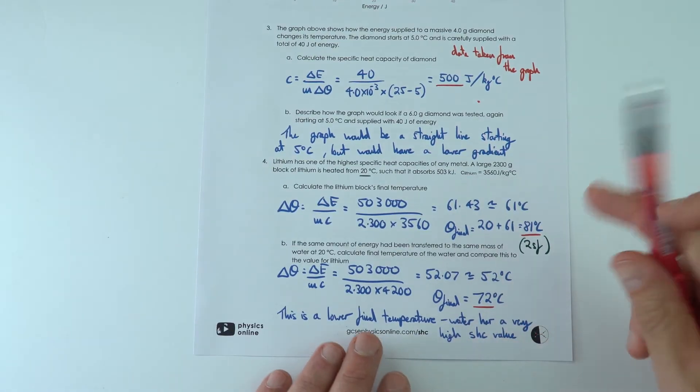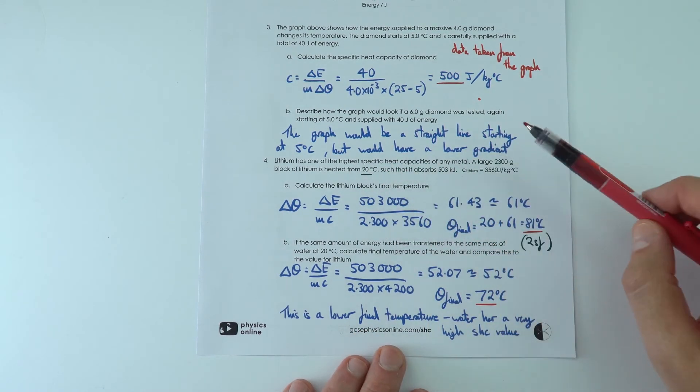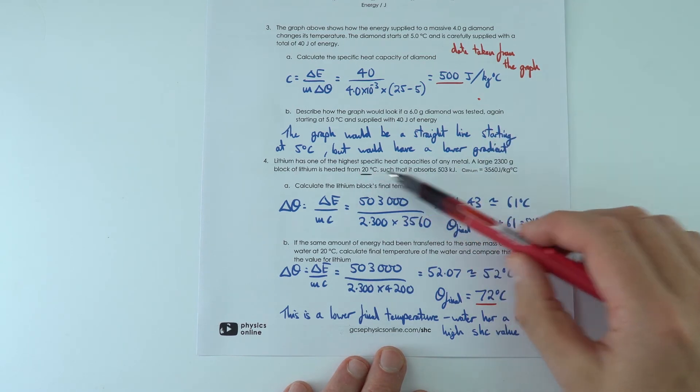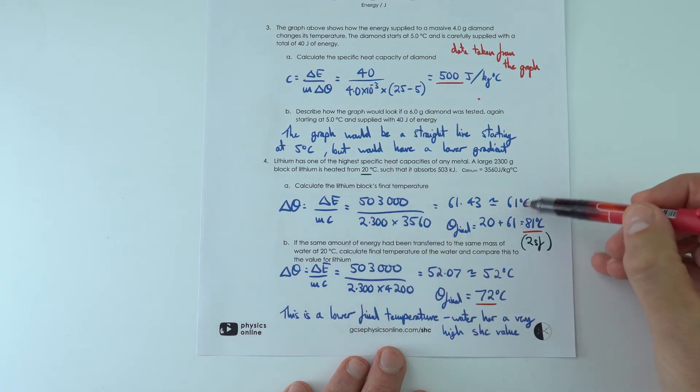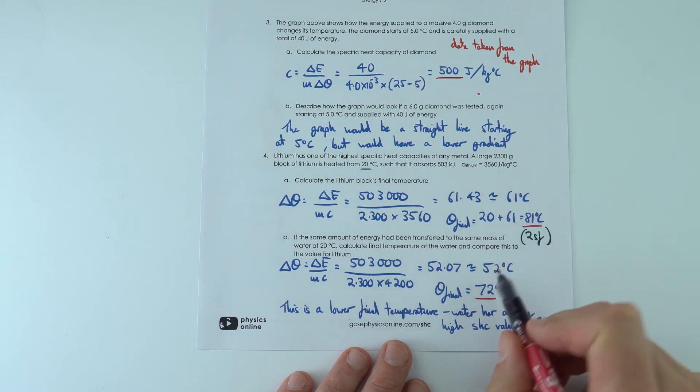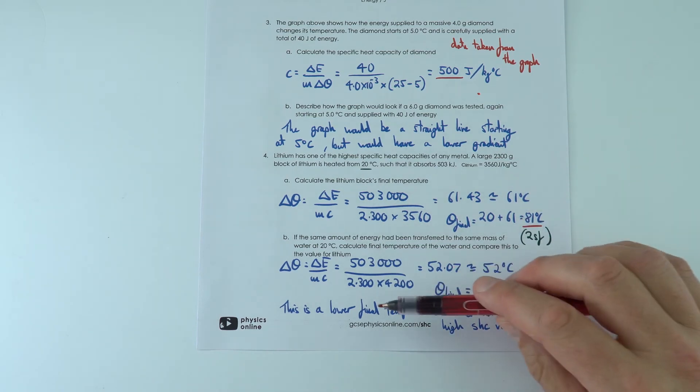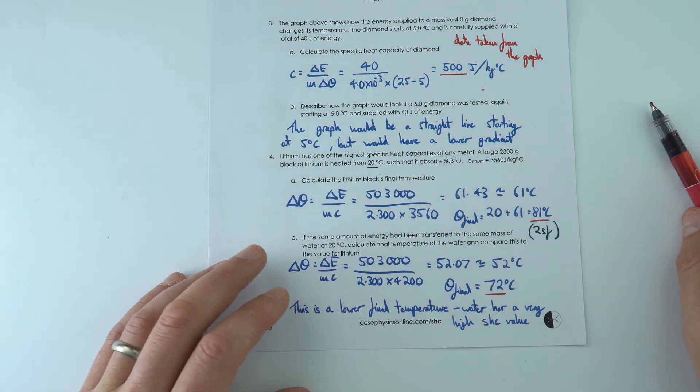This final one, looking at lithium, has a really high specific heat capacity of 3,560. We're using this data, rearranging the equation, putting the numbers in to find that the final temperature is our initial value of 20 plus the change of 61 to make 81. We add it to the initial value of 20 to get a value of 72. That's because water will have a lower final temperature, because water has such a bigger value of specific heat capacity.